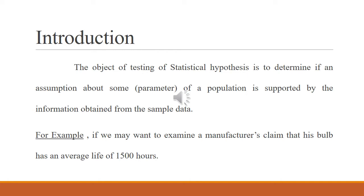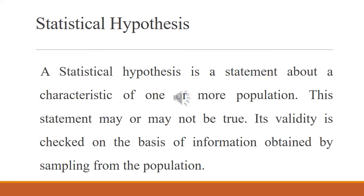The objective of statistical hypothesis testing is to determine if any assumption about some parameter of a population is supported by the information obtained from the sample data. It means we check whether the estimates calculated with the help of sampling represent our population parameters or not. The qualities of a good estimate include unbiasedness, sufficiency, and efficiency. For unbiasedness, our estimate should be equal to the parameter.